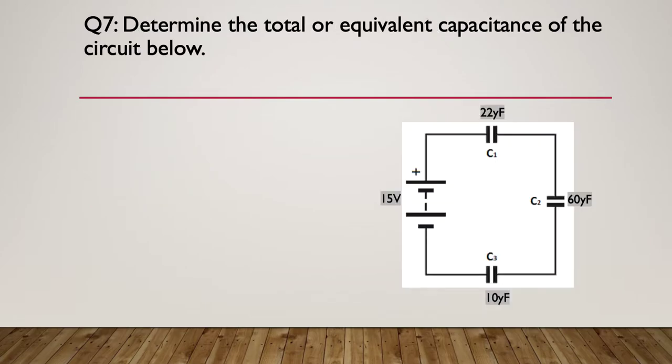Question seven. Determine the total or equivalent capacitance of the circuit below. So, we've got 15 volts applied to three capacitors that are in series with each other. 22 microfarads, 60 microfarads and 10 microfarads. So, pause here and calculate the equivalent capacitance.